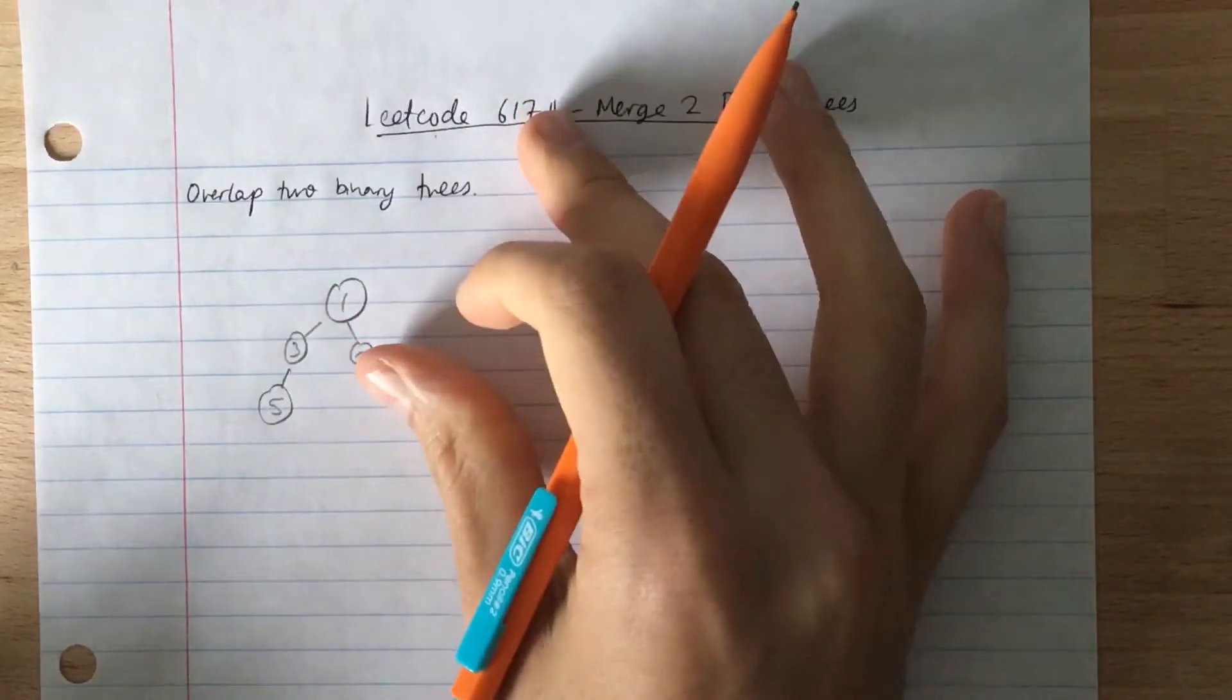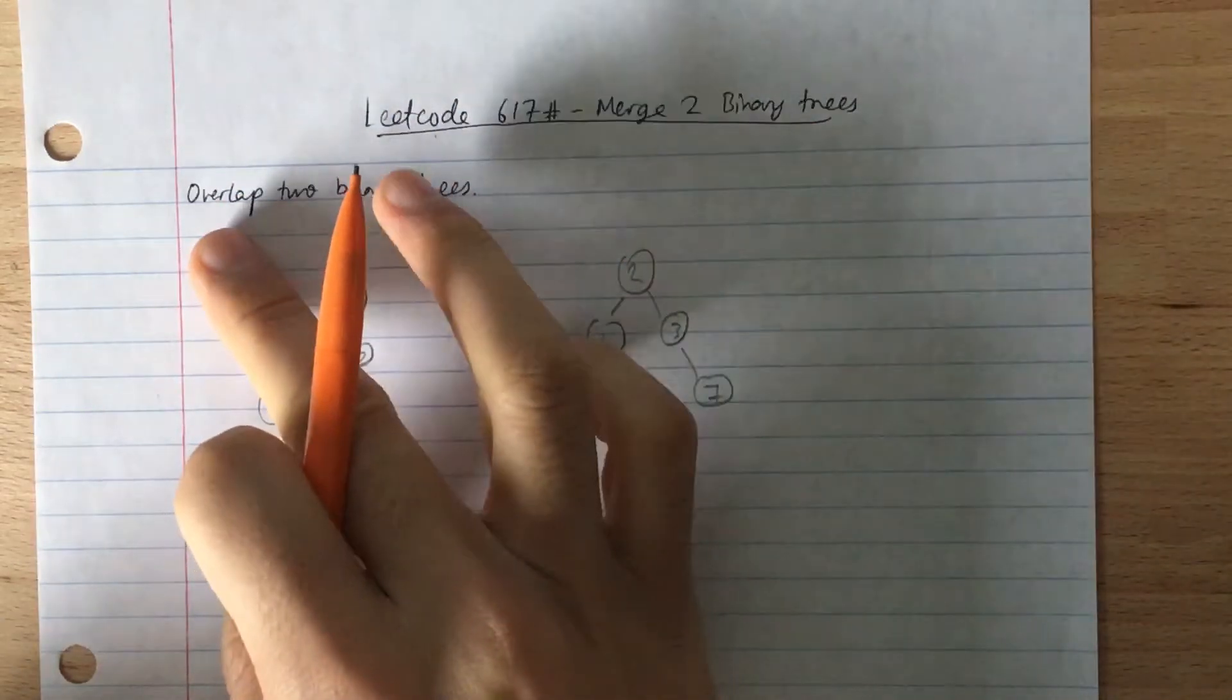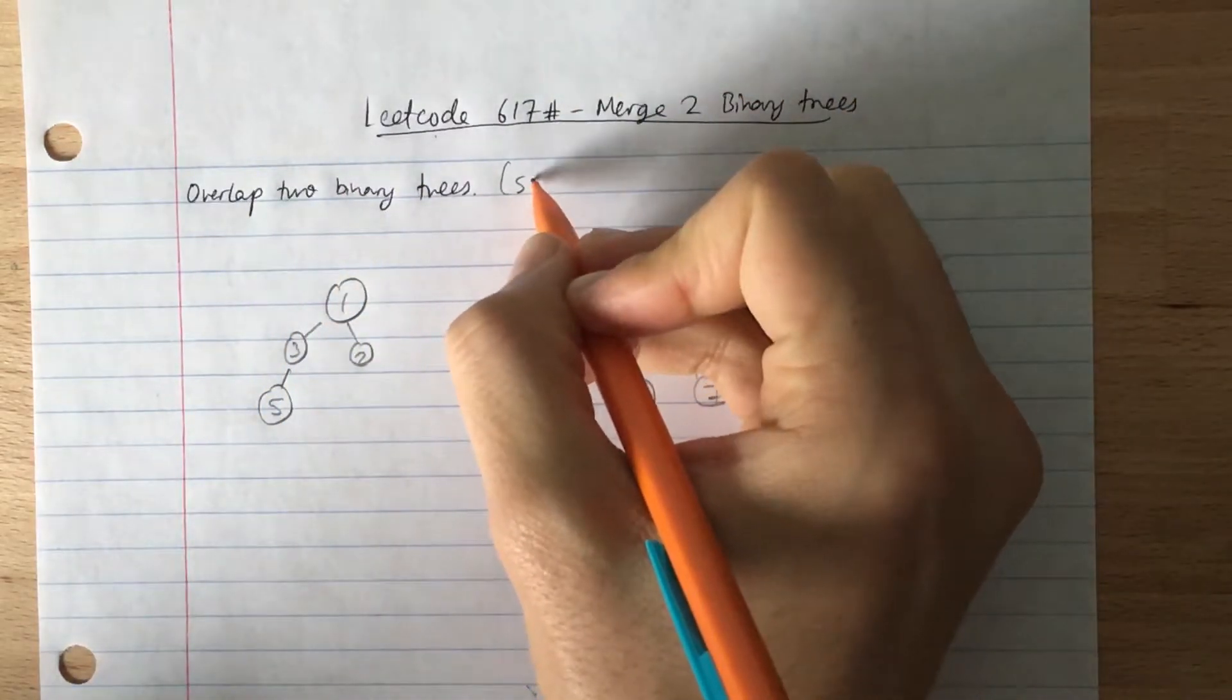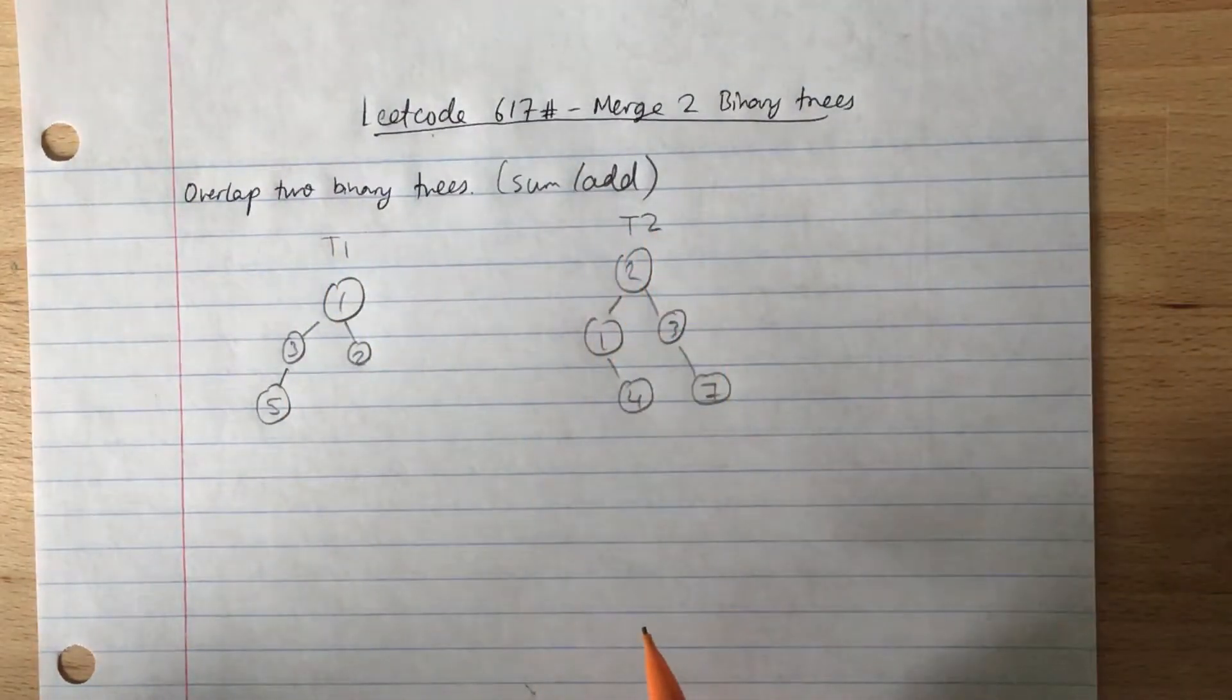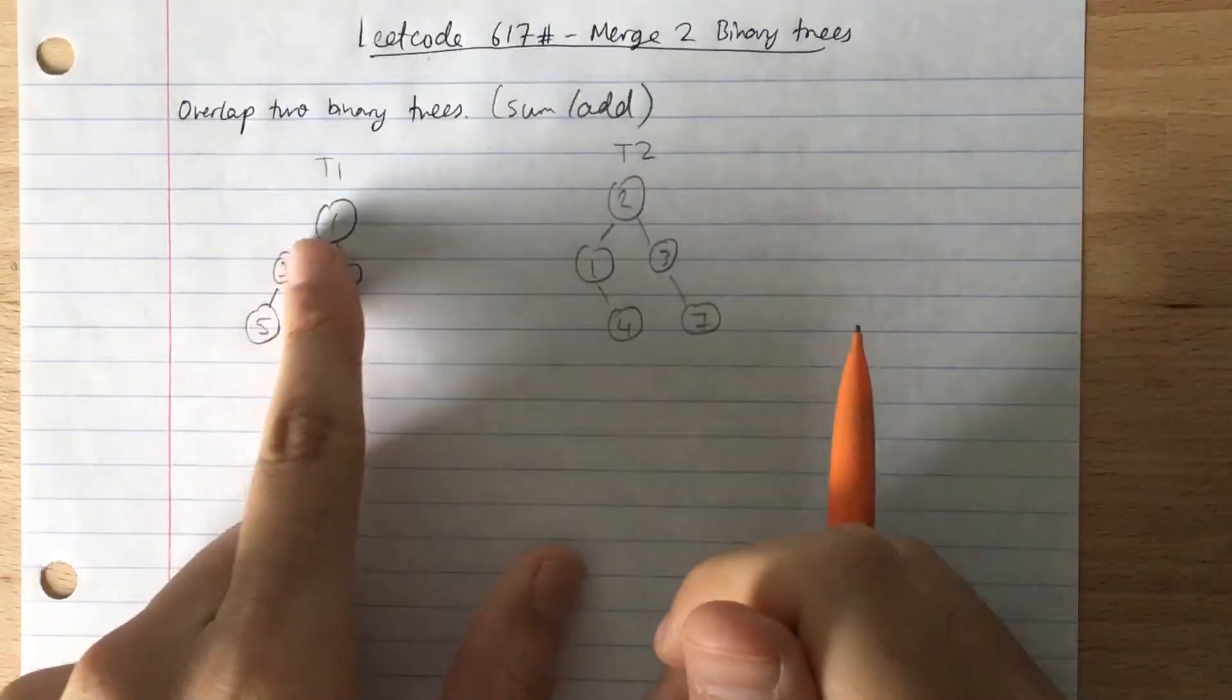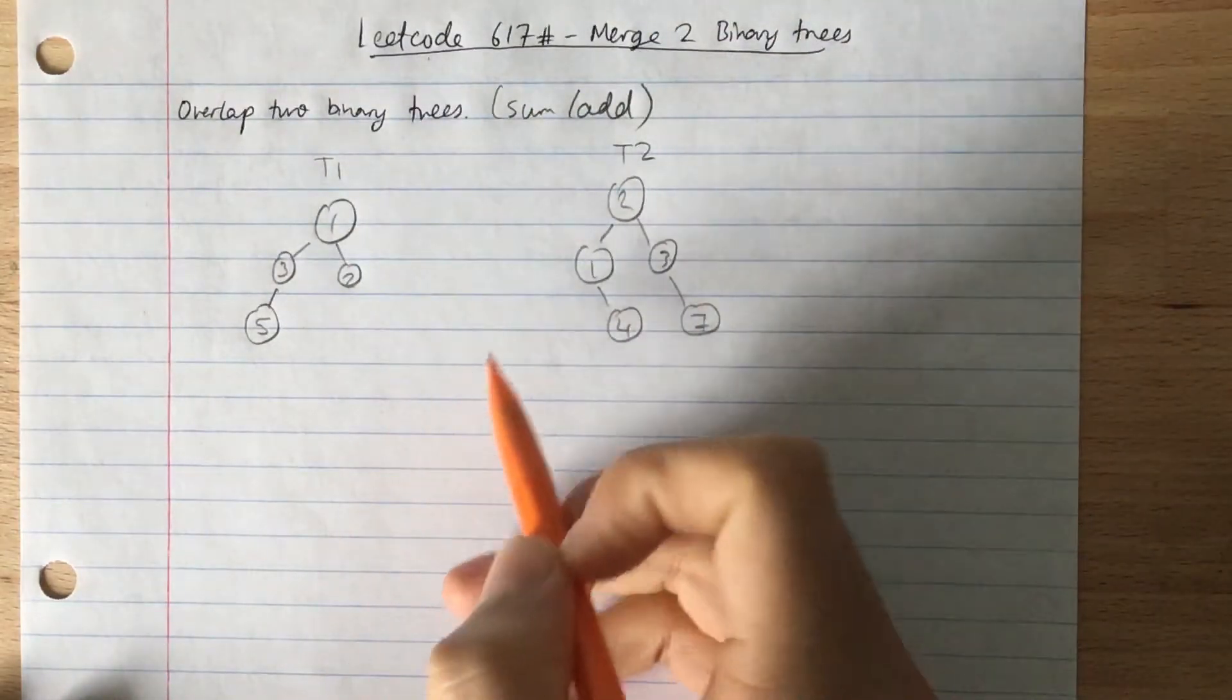So the problem statement, there was like four lines. I was too lazy to write down the entire thing, so I basically wrote the gist of it. The idea is to overlap two binary trees. By overlapping, they mean to sum or add the two binary trees. In this example, we have tree1 here and then tree2 here. What you have to do is combine them into this, combine both of the trees and return the new tree added.